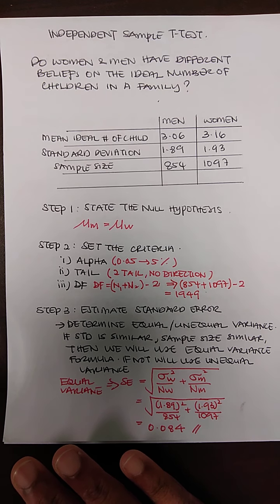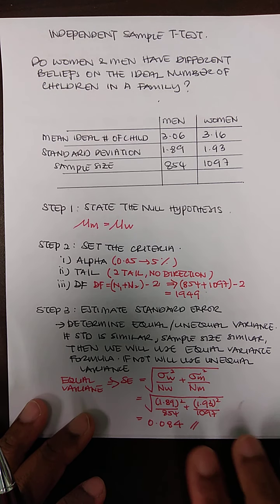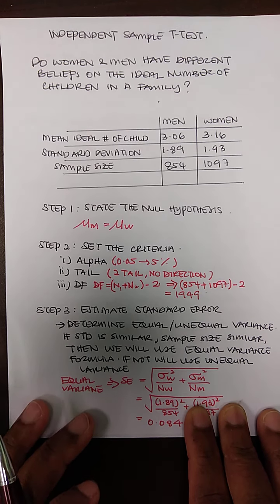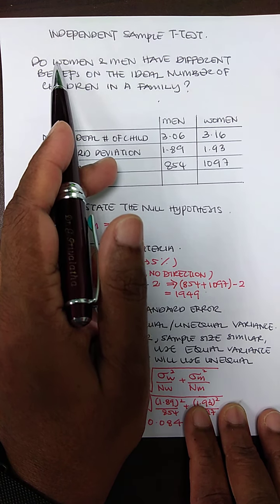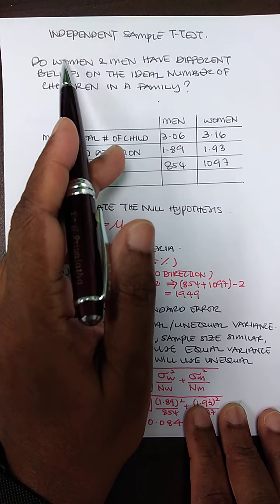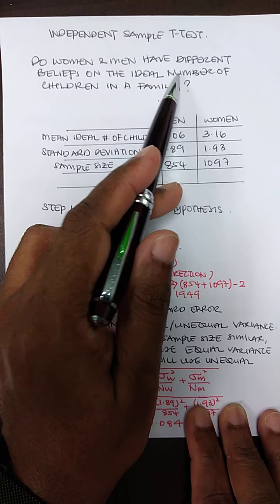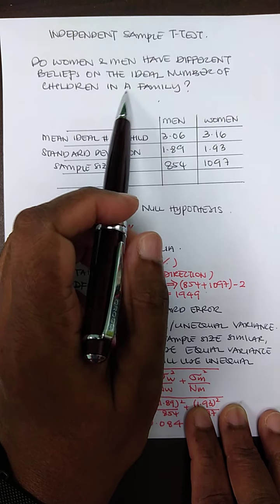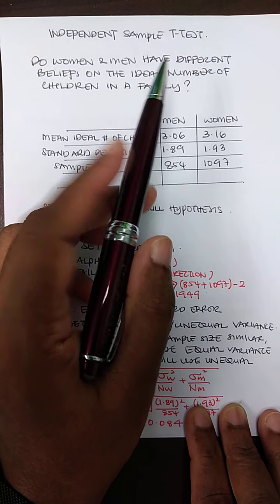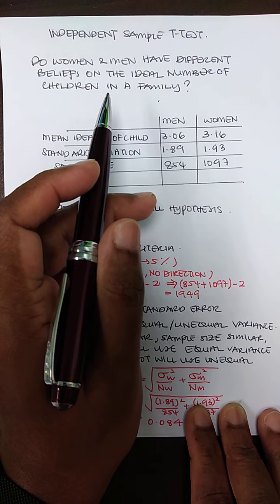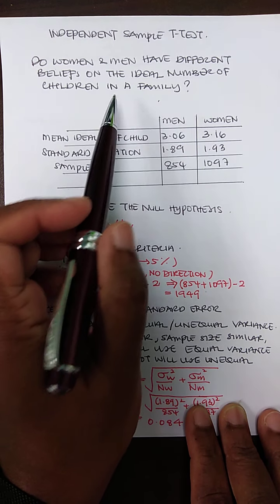Hello everyone. In this video I'm going to show you how to compute an independent sample t-test by hand. Let's look at an example: a researcher would like to examine if there is any difference in women's and men's beliefs on the ideal number of children in a family — what number of children is considered ideal.